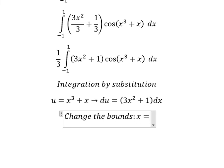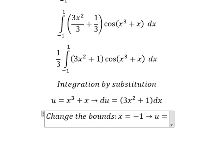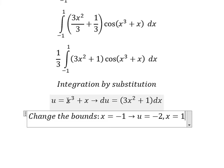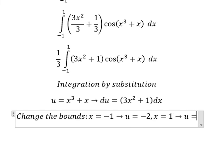When x equals -1, we put -1 in here and here, and you get u equals -2. When x equals 1, we put 1 in here and here, so u equals 2.